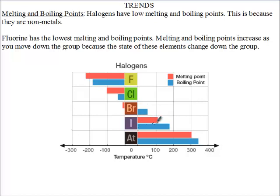As you move down the group, the melting point increases, and the same applies to the boiling point. Fluorine and chlorine have negative melting and boiling points because they are already in the gas state.